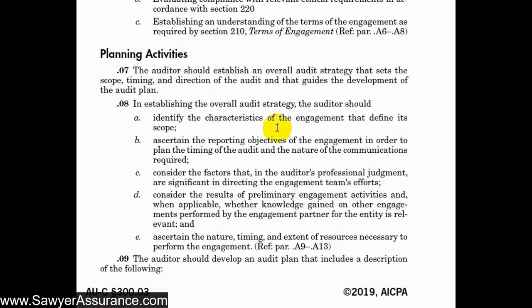The strategy is developed by identifying the characteristics of the engagement that define its scope. We ascertain reporting objectives of the engagement so we can plan the timing of the audit and the nature of the communications required. We consider factors that in our professional judgment are significant in directing our efforts. We consider the results of preliminary engagement activities, and knowledge gained in other engagements that are related or similar, and we also ascertain the nature, time, and extent of resources necessary to perform the engagement.